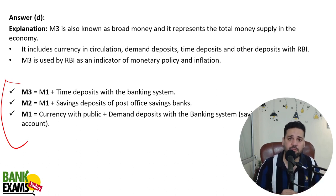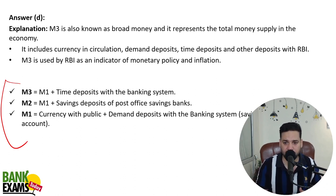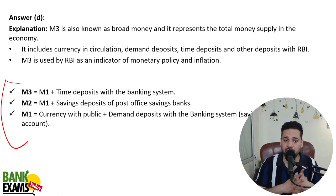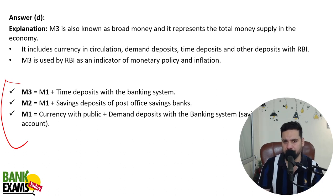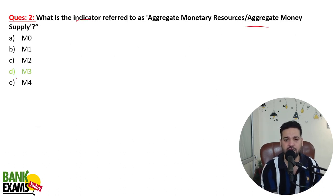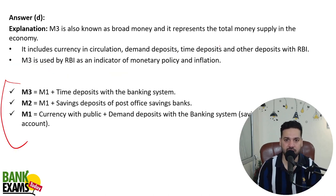M2 is M1 plus the money that you have in the post office. M3 is M1 plus the fixed deposit — also called time deposit — with the banking system. M3 is the total money in the economy. So aggregate money supply refers to the total money in the economy, and that is M3.